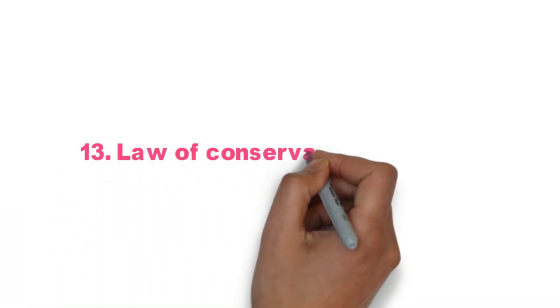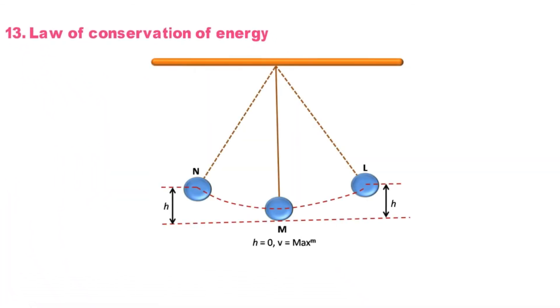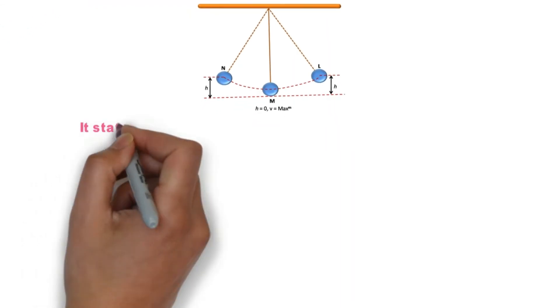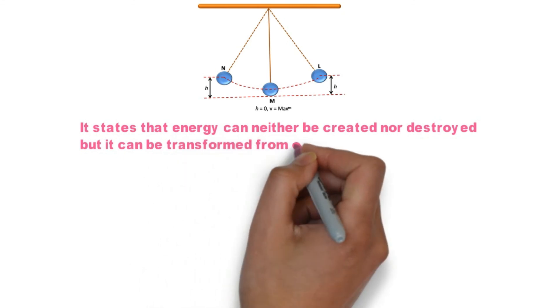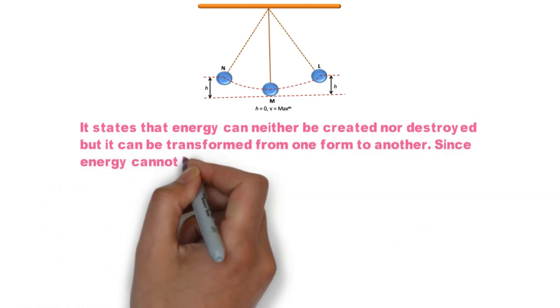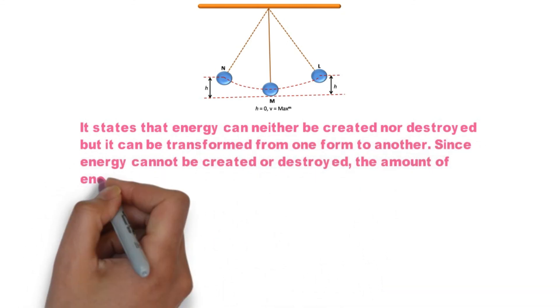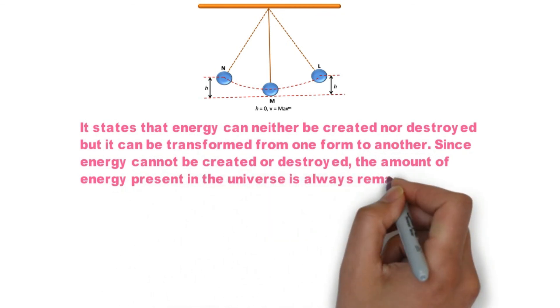Law of Conservation of Energy. It states that energy can neither be created nor destroyed, but it can be transformed from one form to another. Since energy cannot be created or destroyed, the amount of energy present in the universe always remains constant.